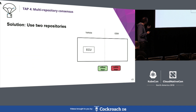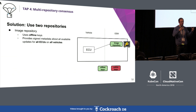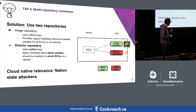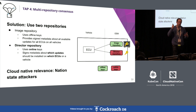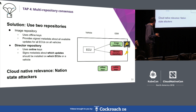With two repositories, you have an image repository that says 'these are valid pieces of software that could be installed on this model of brake controller,' signed with an offline key. Then there's another repository called the directory repository that says 'you as a vehicle should install these things.' Software has to be on both lists — signed with the offline key as a valid image, and the director must say it applies to your vehicle. This is also relevant in cloud-native scenarios involving nation-state actors.